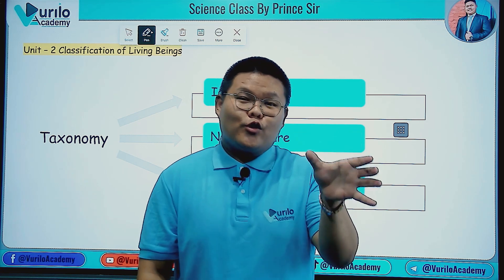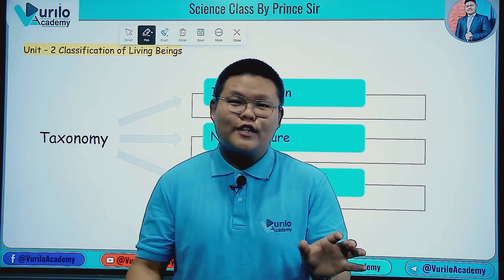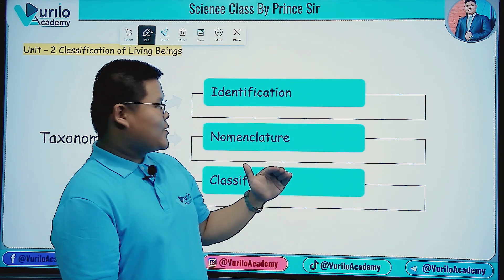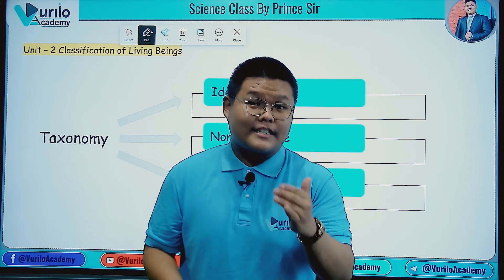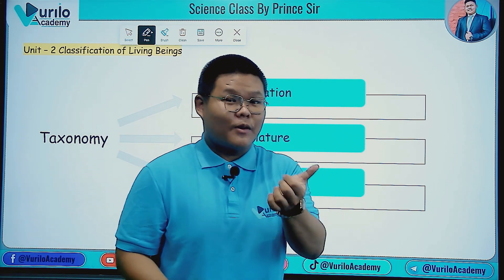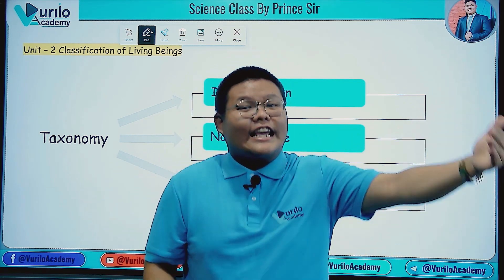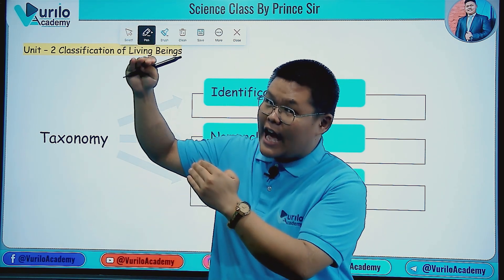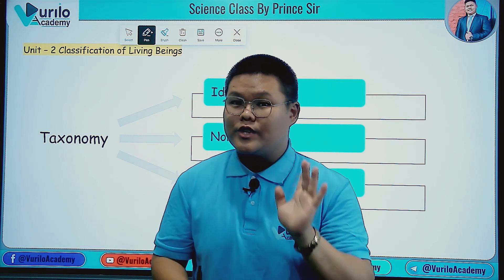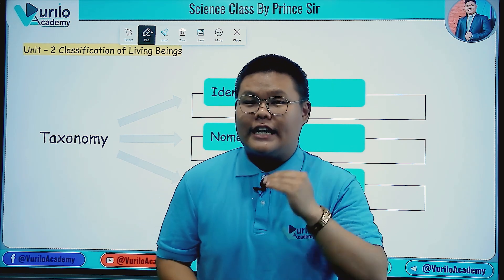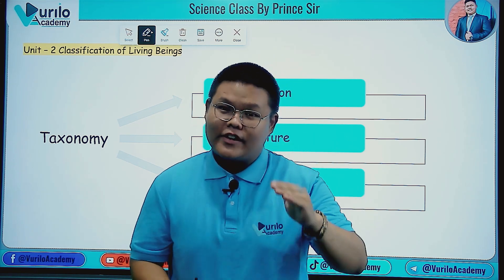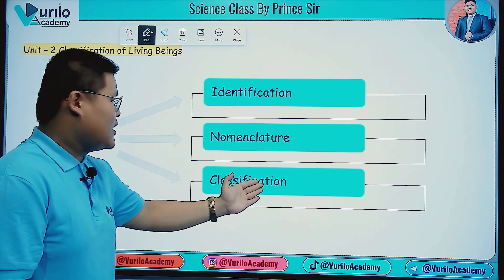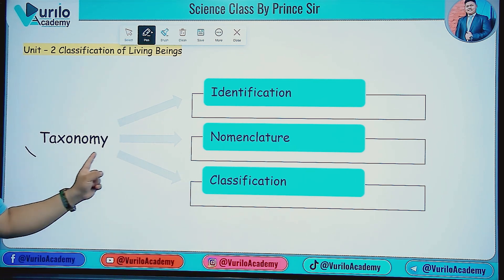The first step is to identify the name of the animal, which involves nomenclature. When you encounter an animal — whether through a photograph or direct observation — the first step is identification, followed by giving it its proper nomenclature.